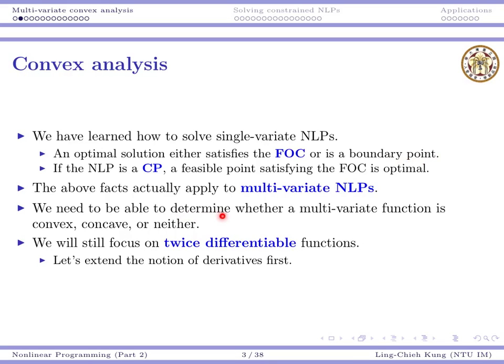The first thing we need to do is to determine whether a function is convex, concave, or neither — whether a multivariate function is convex or concave. We still need to rely on twice differentiability, so we will assume all functions are twice differentiable. The main tool we need in this lecture is linear algebra. If you have learned that in management mathematics or calculus, that is very good — either way, I will teach you everything.